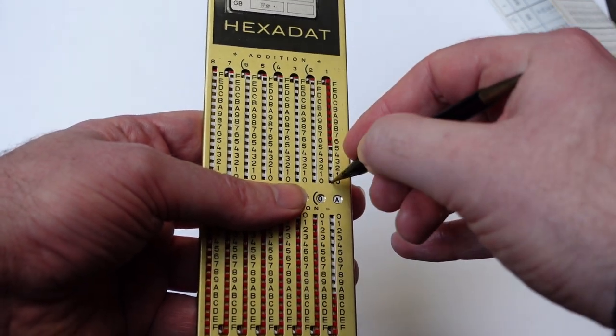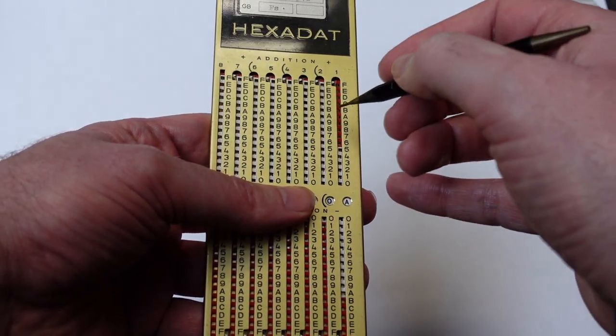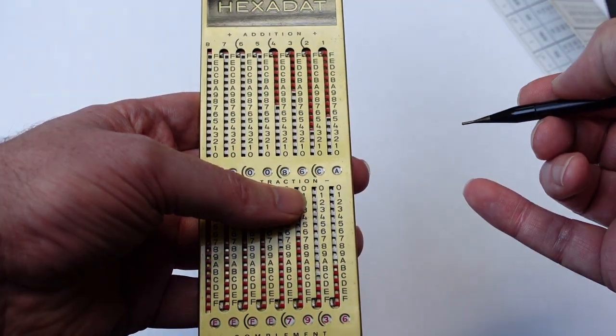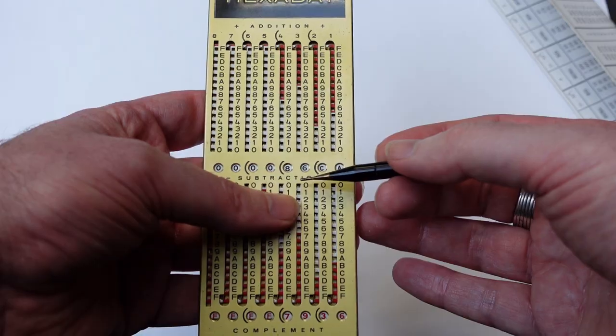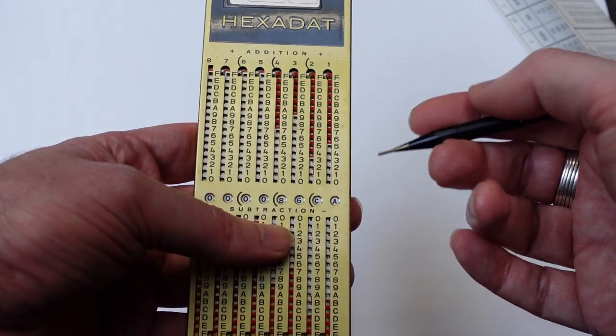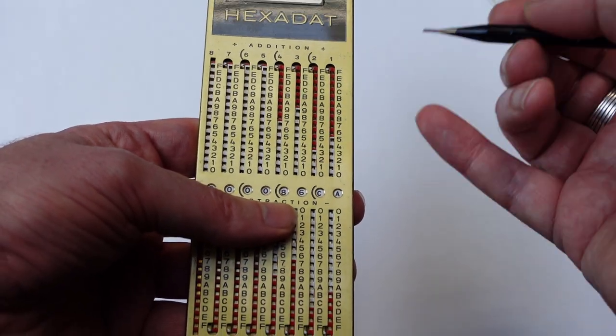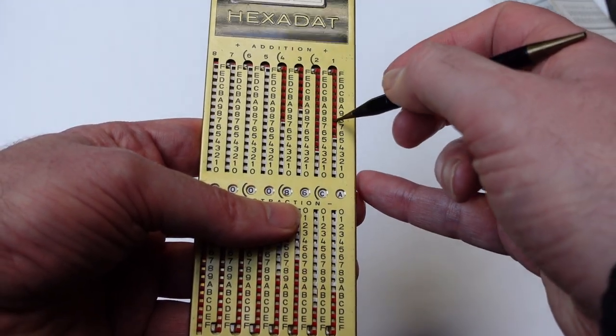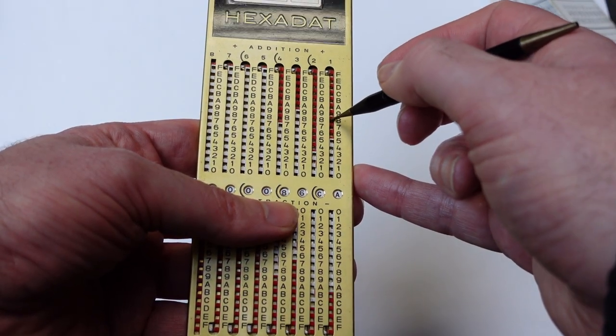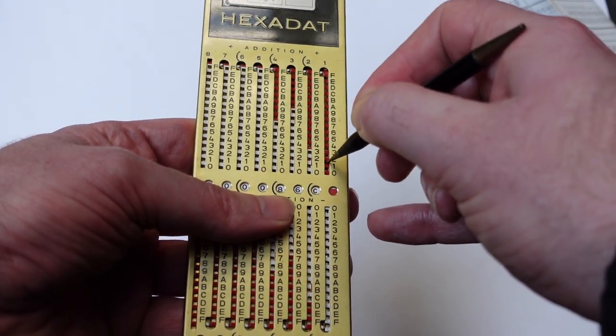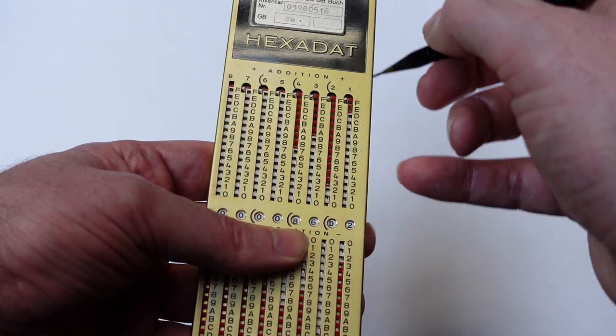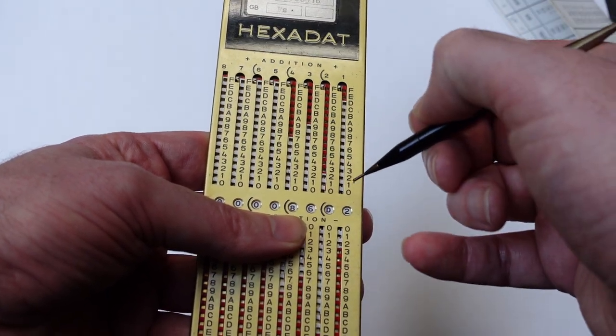You can simply add a number by putting the stylus in and sliding it down. So I've now added 86CA. And as with all these slide adiators, if you want to add a number that makes you put the stylus in the red region, then instead of pulling it down, you can't go all the way, you have to pull it up and go around the corner so that you then add one to the next column. So you have a carry.